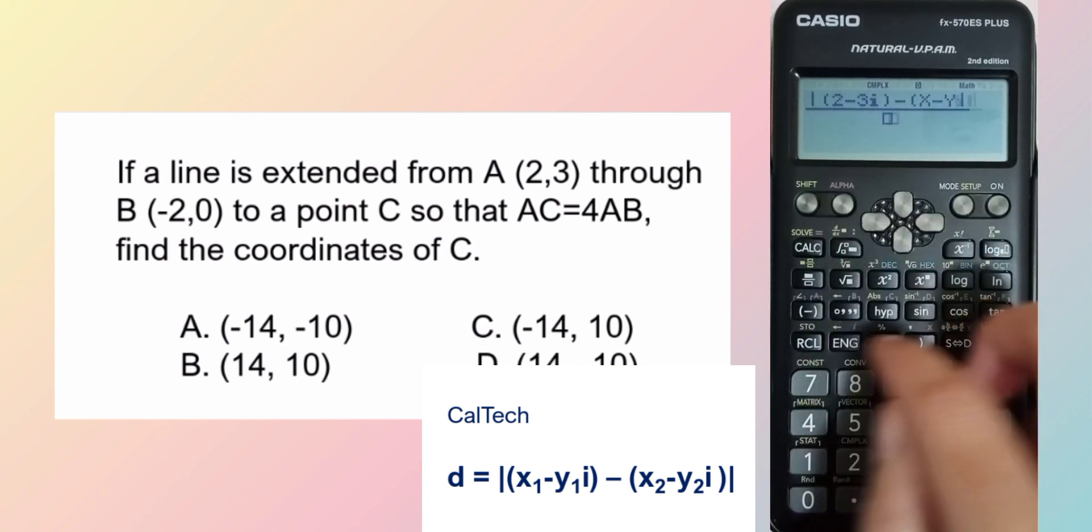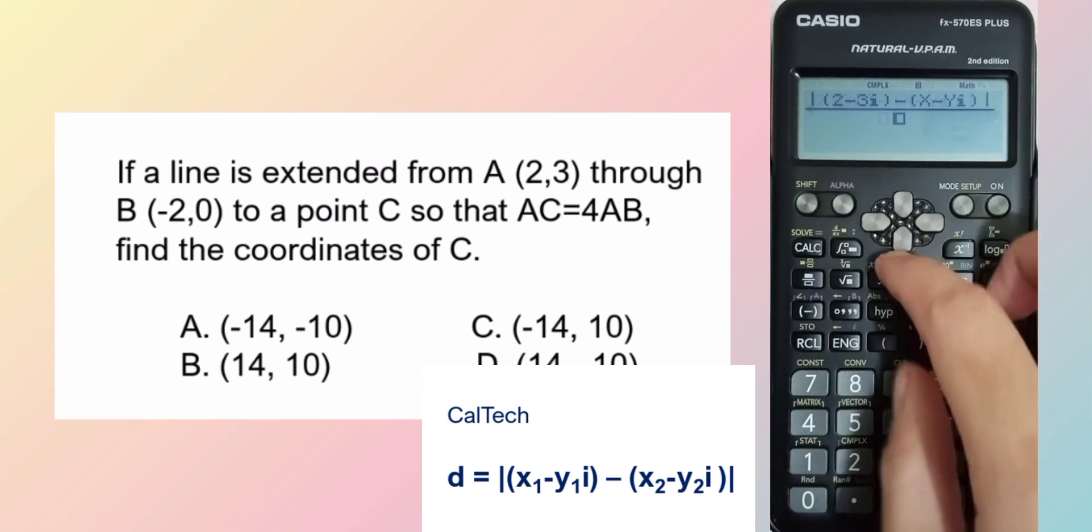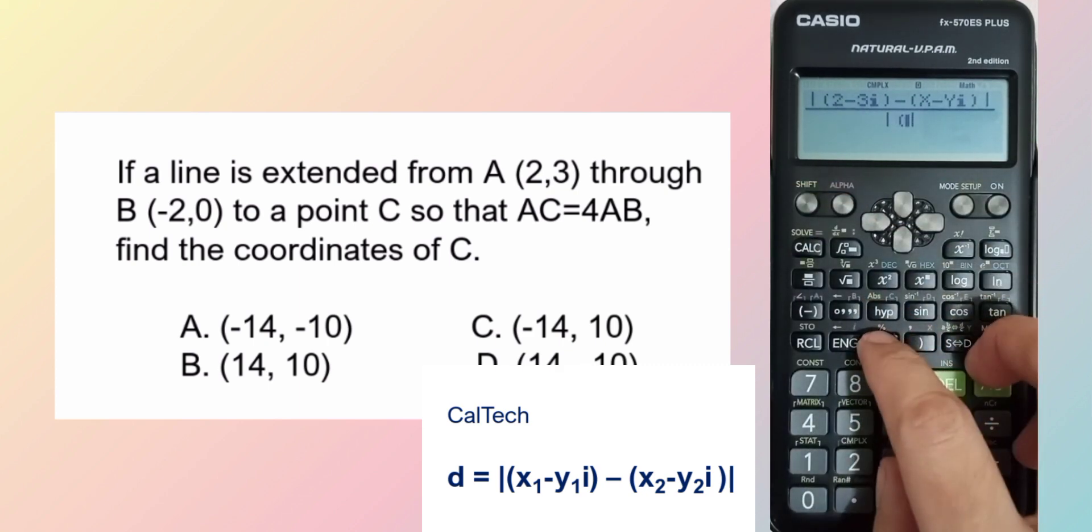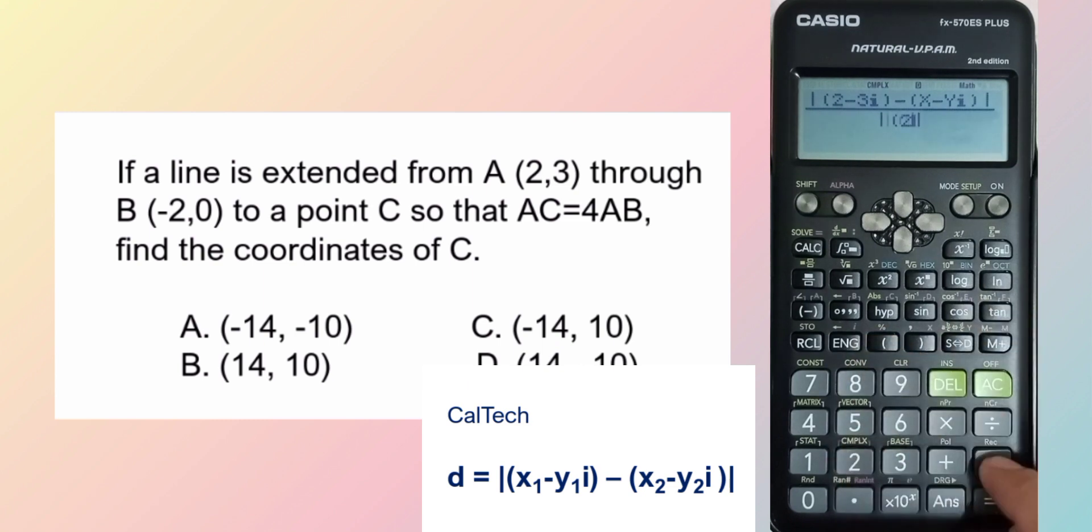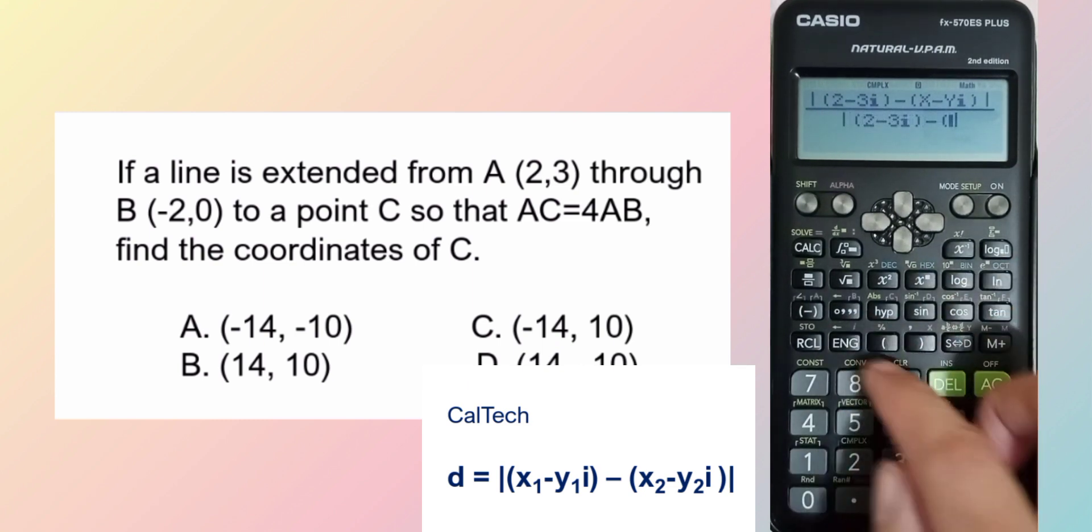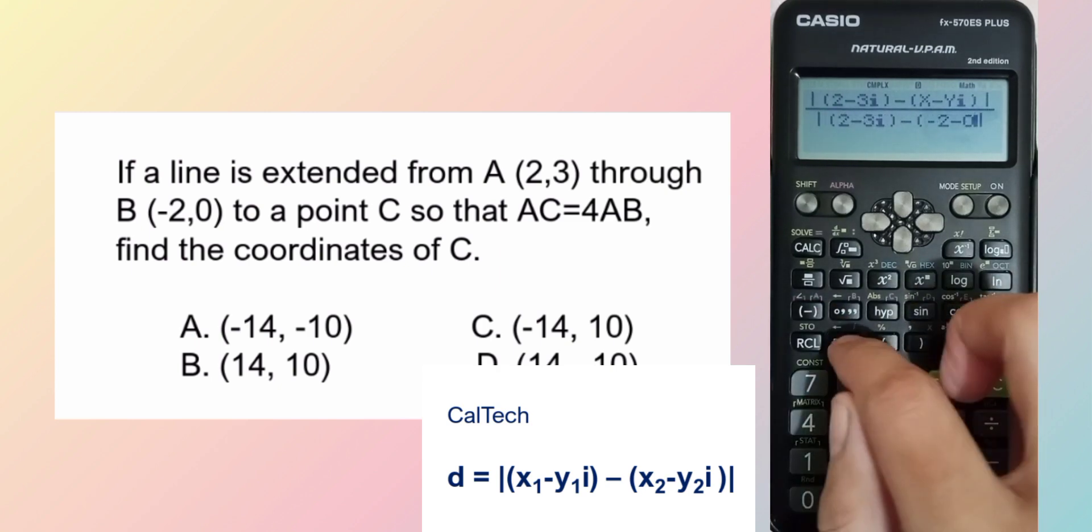then over AB, shift hype. Then copy natin to minus 3I, then letter B, negative 2 minus 0I.